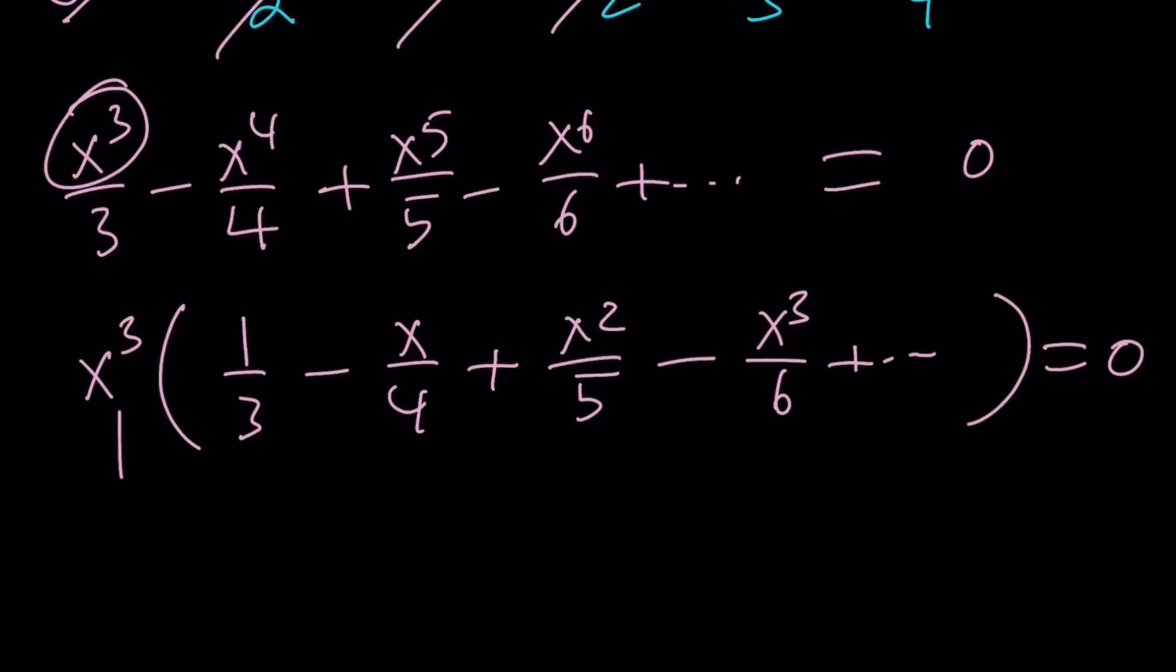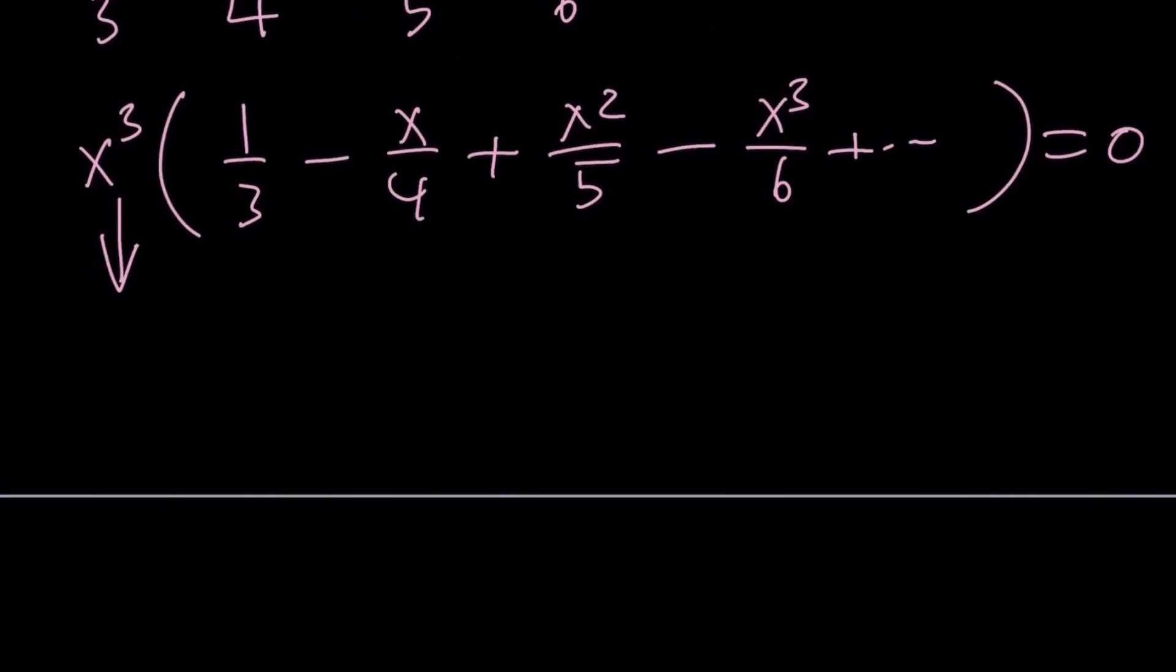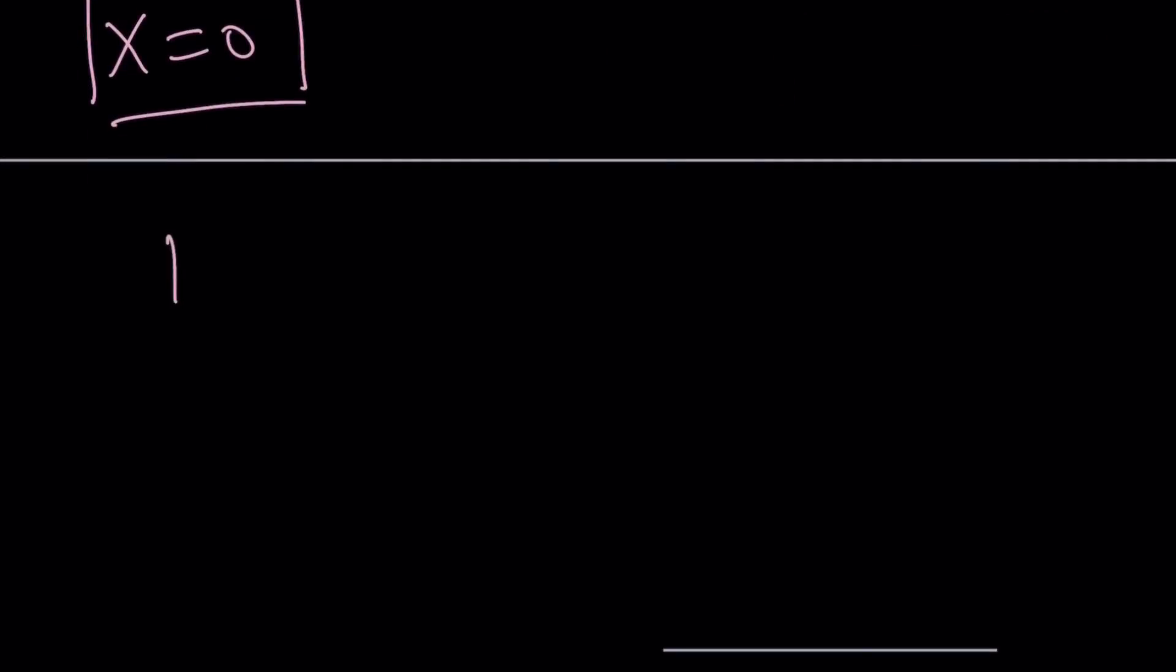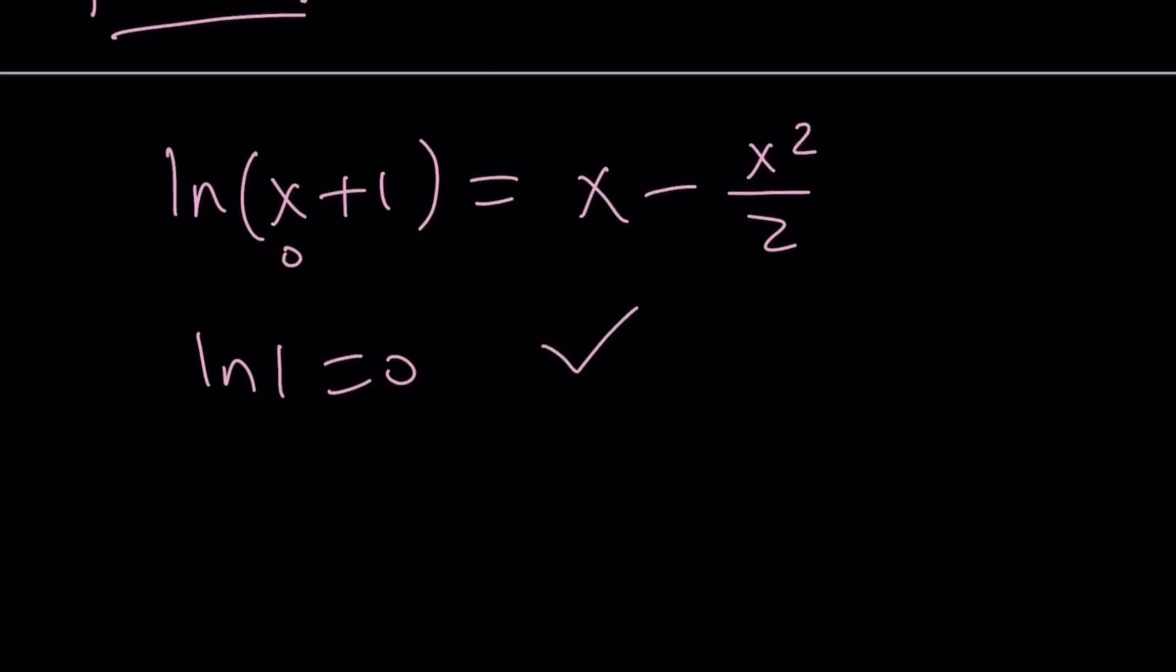Notice that when you set it equal to 0, x³ equals 0 satisfies this equation. Therefore, x equals 0 is a solution. Make sense? Now, we're going to check that in the original problem to make sure it works. And then we'll do a little bit of calculus, and then I'm going to show you the graph at the end. The graph is very interesting, actually. So if you're plugging 0, you get ln(1) equals 0, which is true. So x equals 0 is indeed a solution.